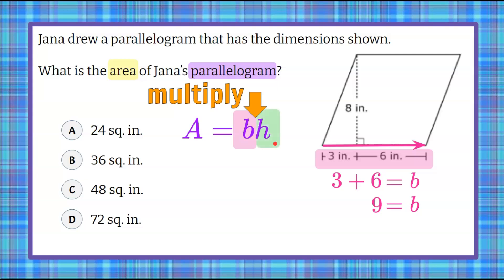Now we want to identify the height. Height is always perpendicular to the base. So we're going to look at this dimension right here and notice that it's perpendicular. That's what that little box means right there. That's a right angle or 90 degrees making it perpendicular to the base. So we know that eight inches is H, the height.